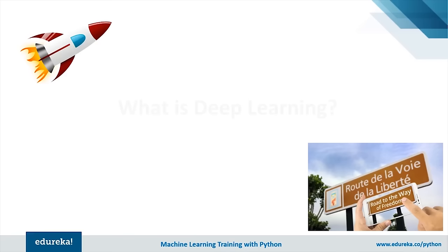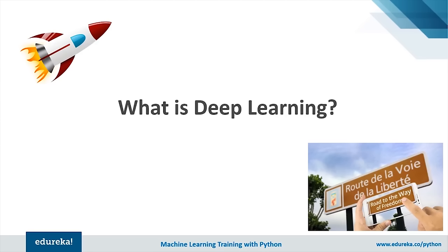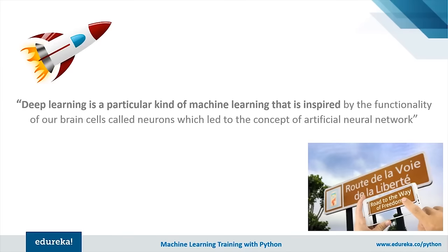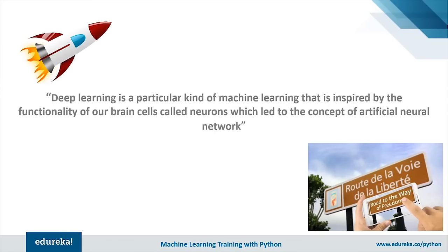Deep learning can be considered like a rocket engine — its fuel is the huge amount of data fed to the algorithms. It is a particular kind of machine learning inspired by the functionality of brain cells called neurons, leading to the concept of artificial neural networks. It takes data, adjusts connections between artificial neurons according to data patterns, and more neurons are added as data size grows. It automatically learns features at multiple levels of abstraction, allowing systems to learn complex function mappings without depending on any specific algorithm.